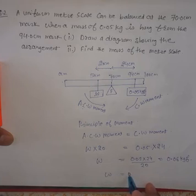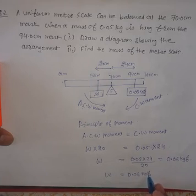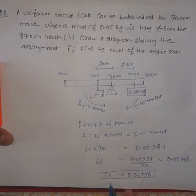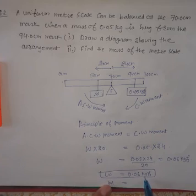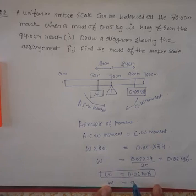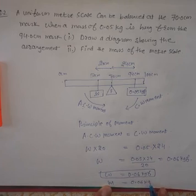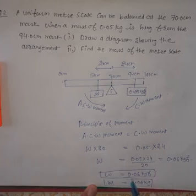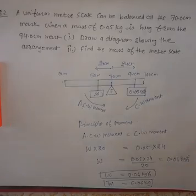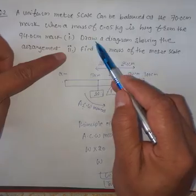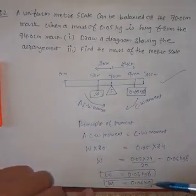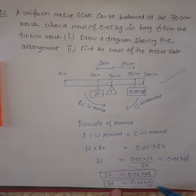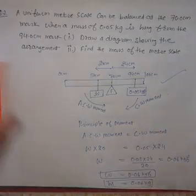The weight of the scale is 0.06 kilogram force. To convert weight back to mass, mass = weight (in kilogram force), so the mass of the meter scale is 0.06 kilogram. The question had two parts: first, draw the diagram — which we have done — and second, find the mass of the meter scale, which is 0.06 kilogram. That completes the second question.